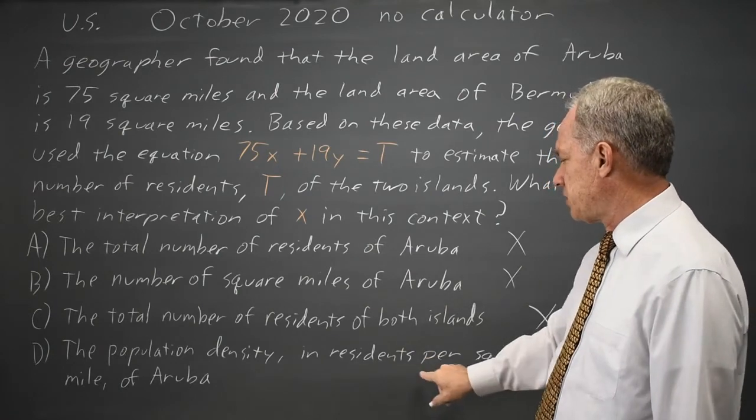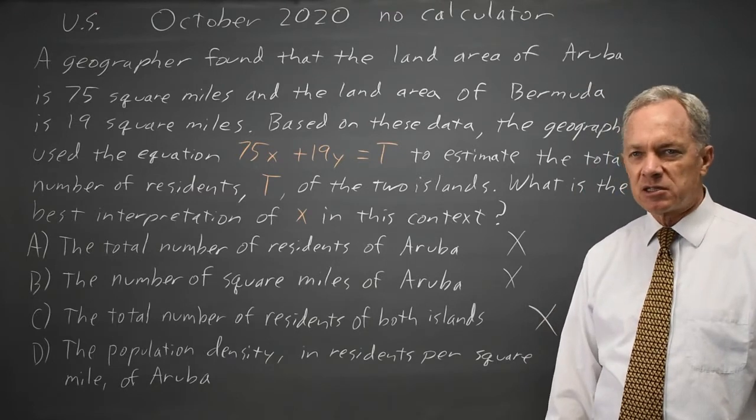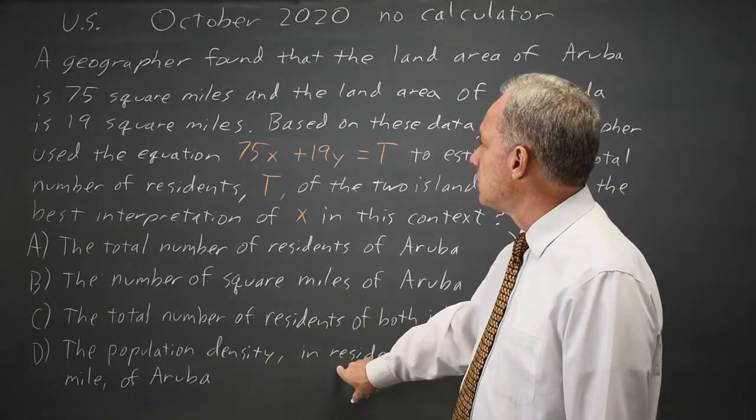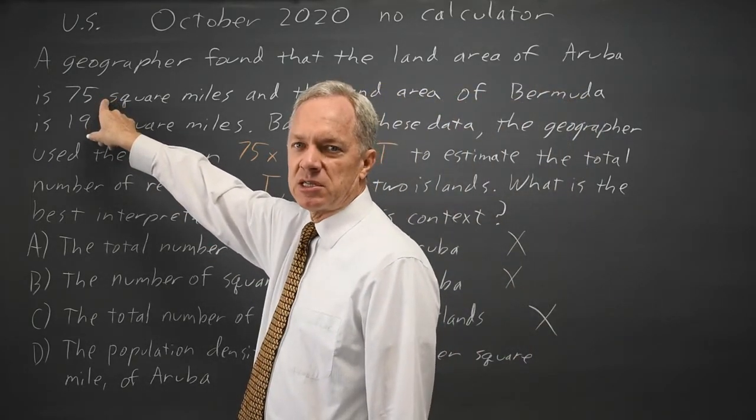So it sounds like population density and residents per square mile would be the right answer. And if you think about this, residents per square mile for Aruba times 75 square miles will give you residents for Aruba.